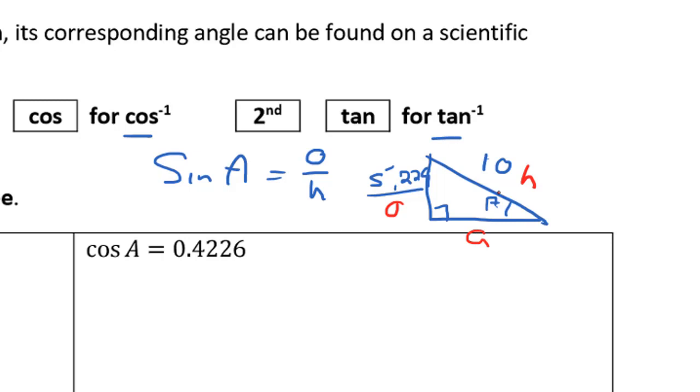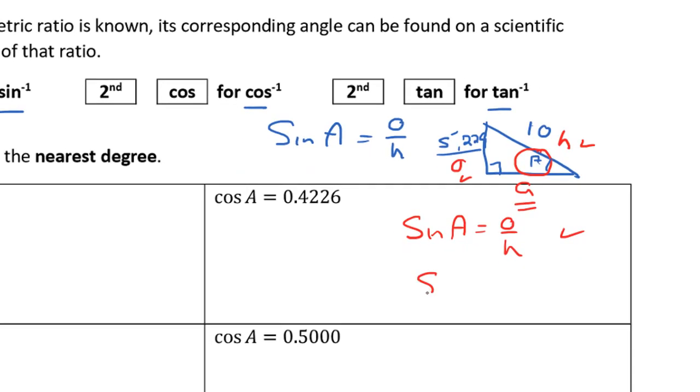If we're going to calculate what angle A is, we would use sine because we're using opposite and hypotenuse and we don't care what adjacent is. So we would write down sine of angle A equals opposite over hypotenuse. You always start with your formula. I know it's a little bit extra writing, but you should do it.